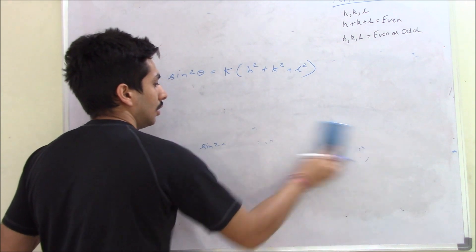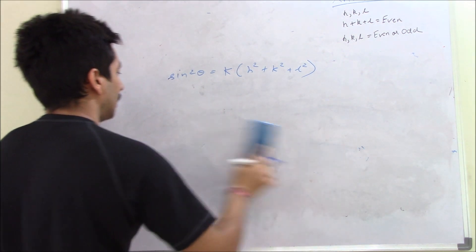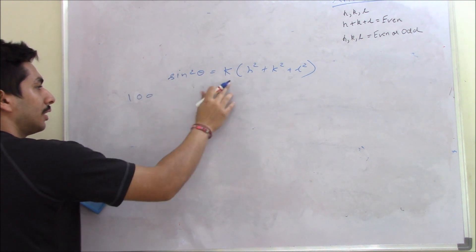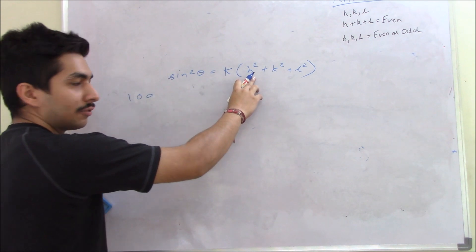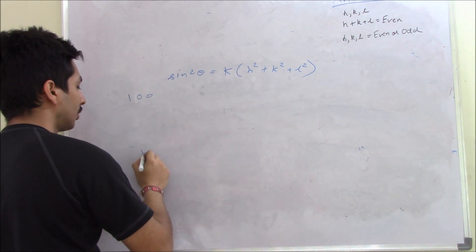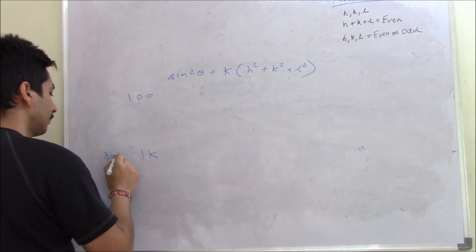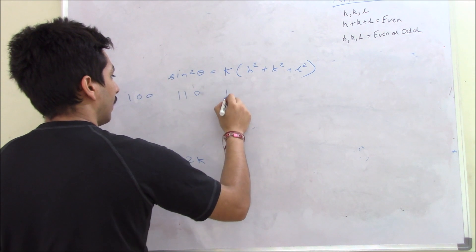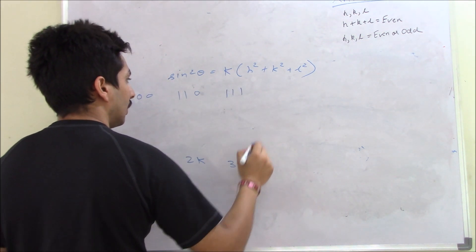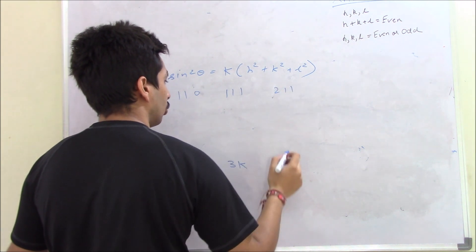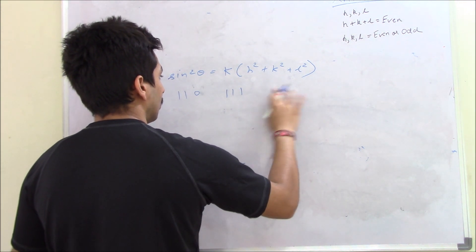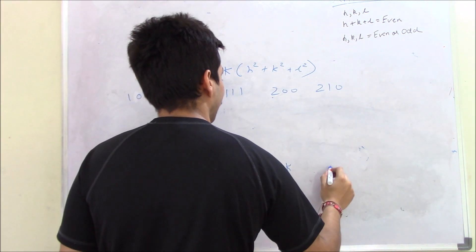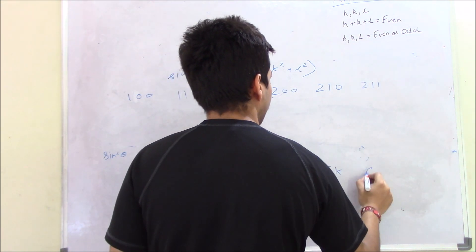Now what is the significance of this? Let's take different planes. The first plane is (1,0,0): the value comes out to be 1K. Then (1,1,0): the value is 2K. The next one (1,1,1) gives 3K. Then (2,0,0) gives 4K, then (2,1,0) gives 5K, then (2,1,1) gives 6K.